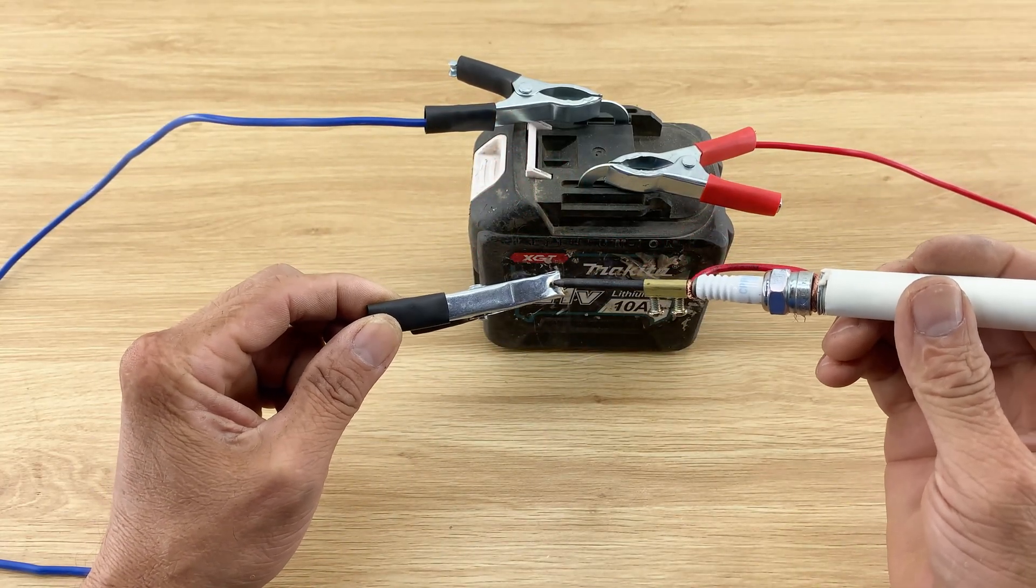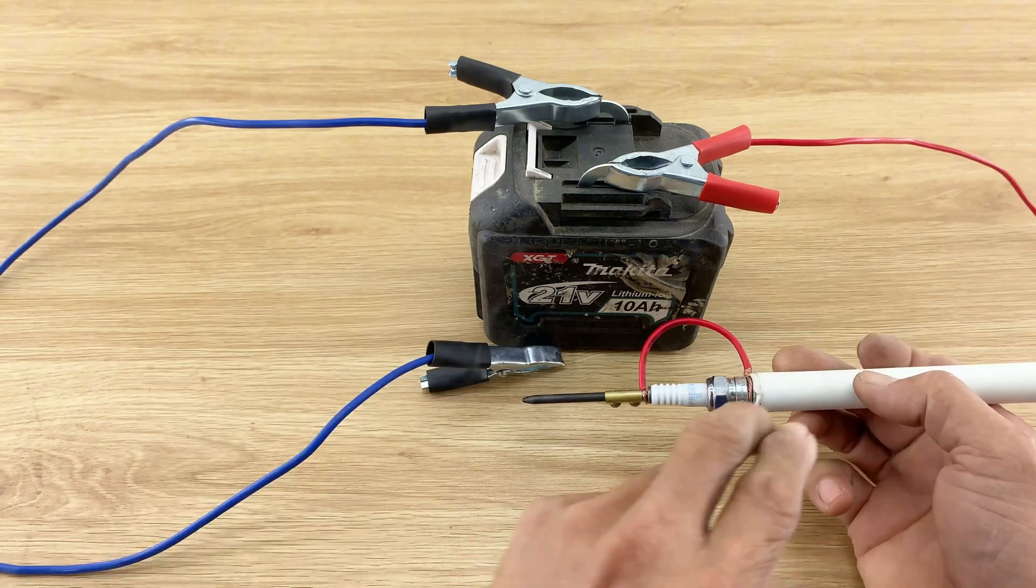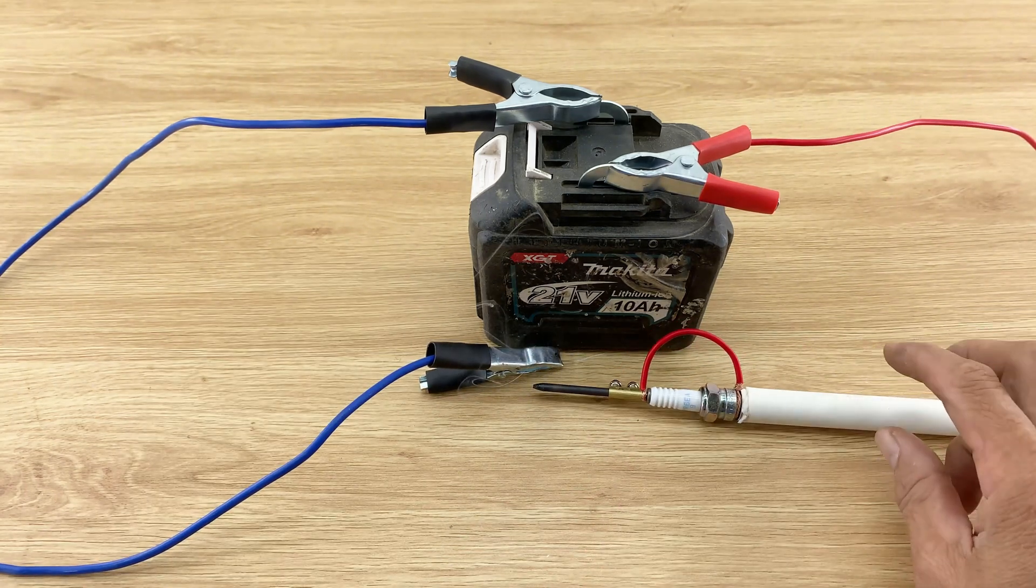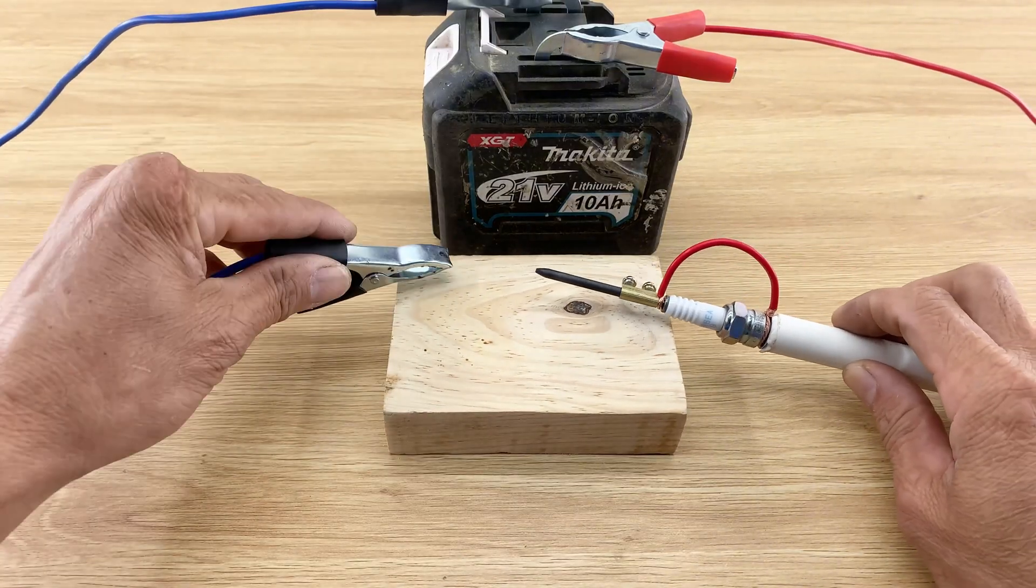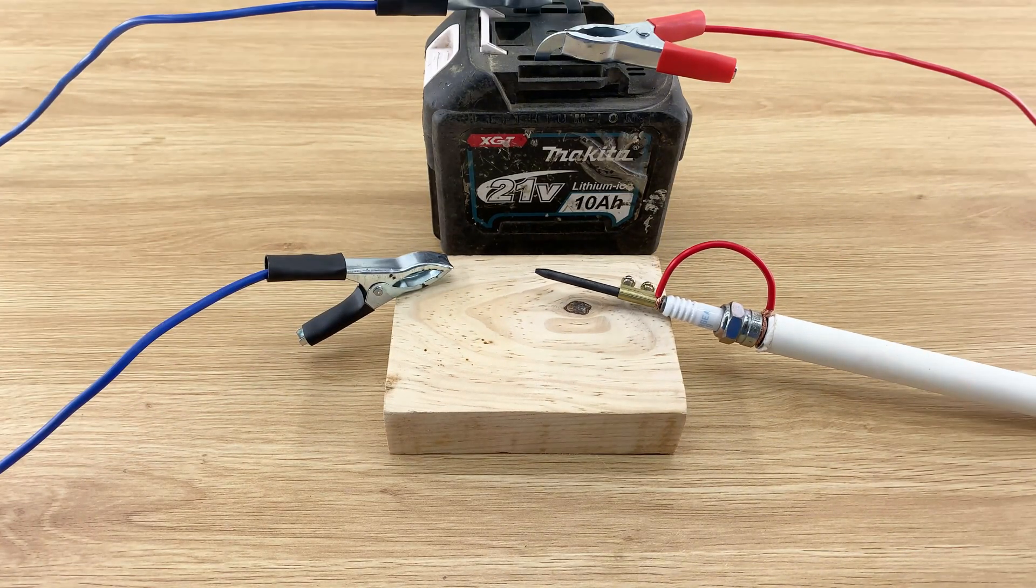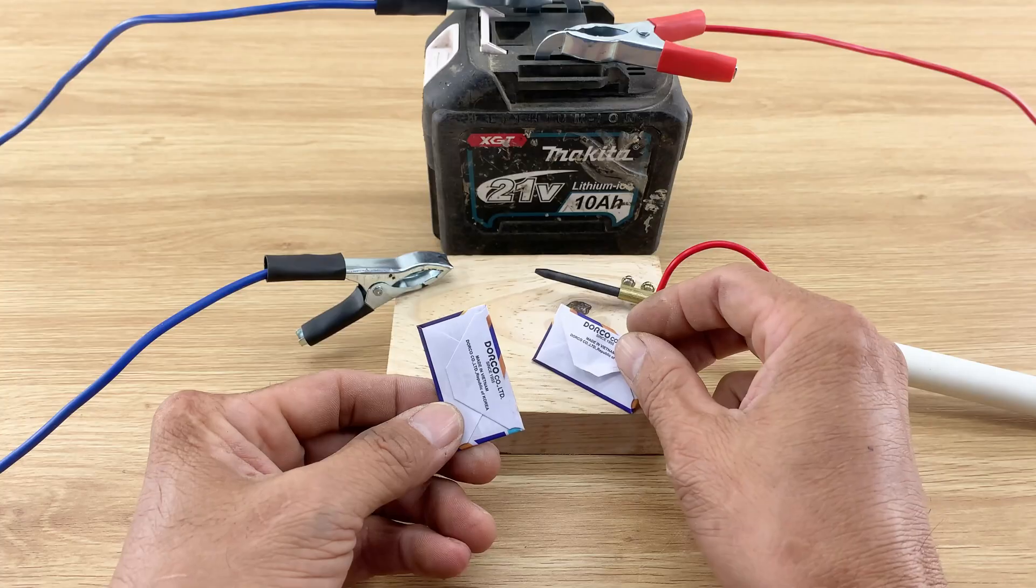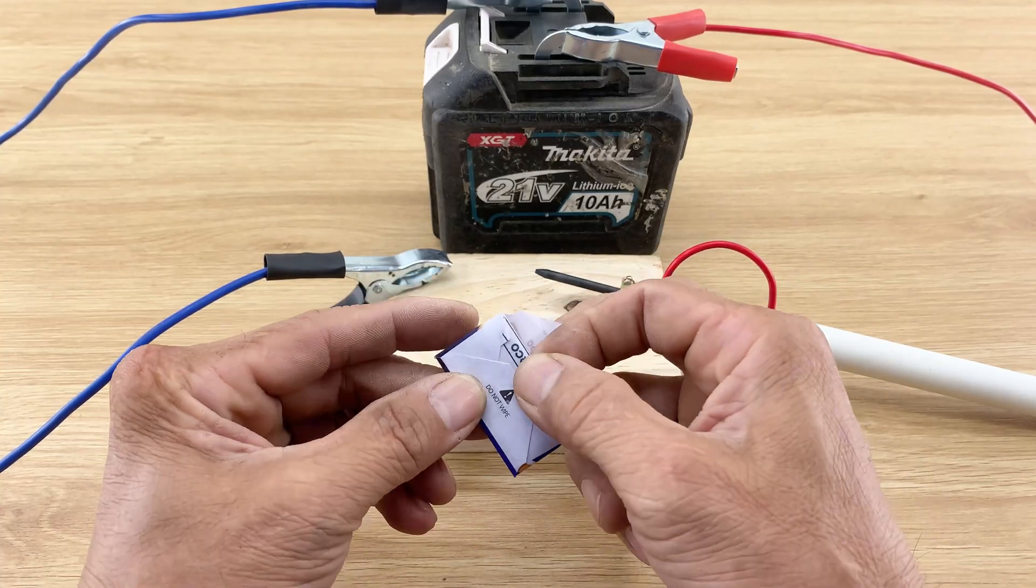Watch closely as I touch the carbon rod to the black clip. See those sparks? That's energy concentrated, ready to work. I set up a small block of wood as a workbench. Let's see what this homemade tool can do.